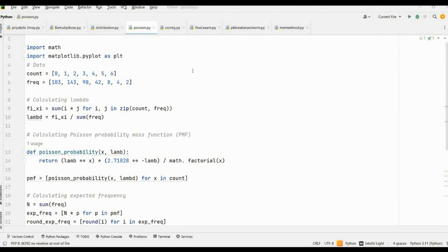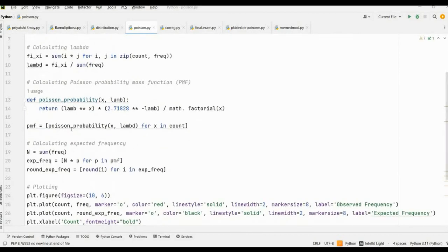Now, for calculating lambda for Poisson distribution, we enter this code. As you can see on the screen, this is the code for calculating lambda. Again, for calculating the PMF of Poisson distribution, we define poisson_probability with parameters x and lambda, and then enter the return function with the PMF of the Poisson distribution.